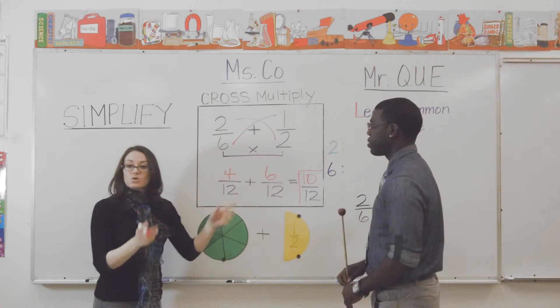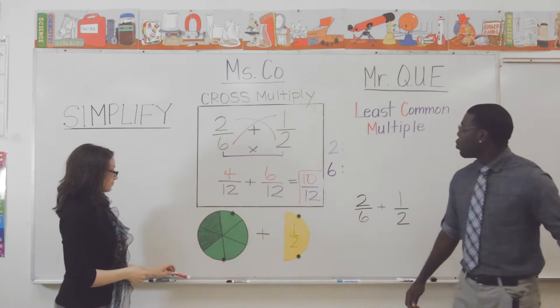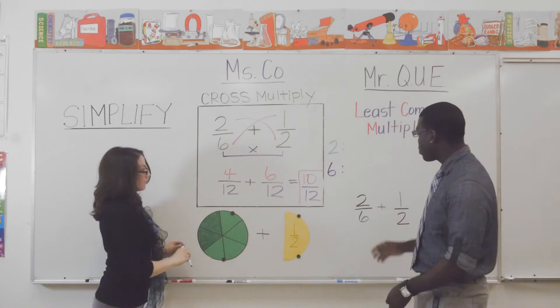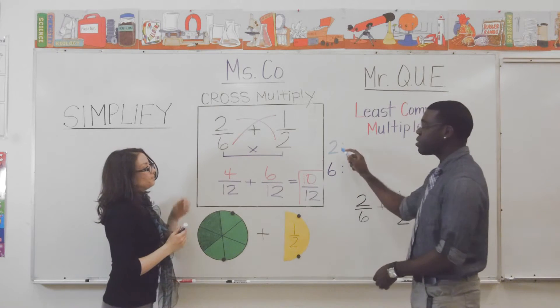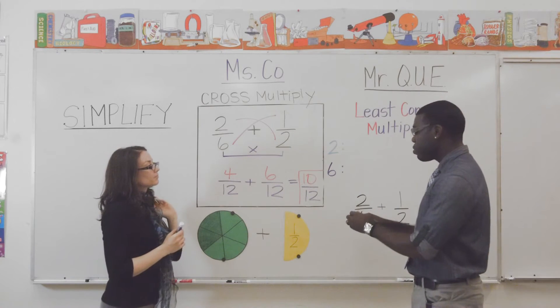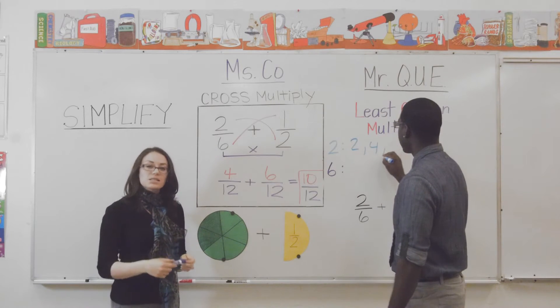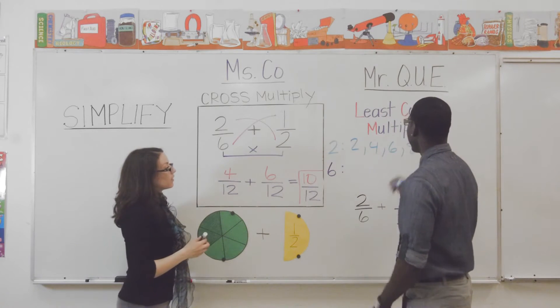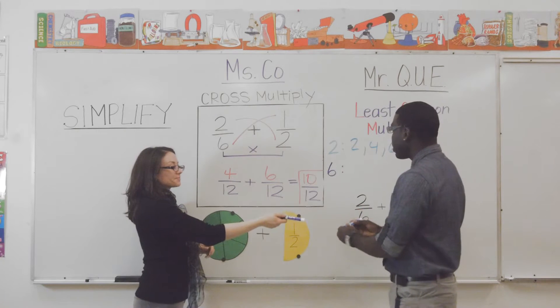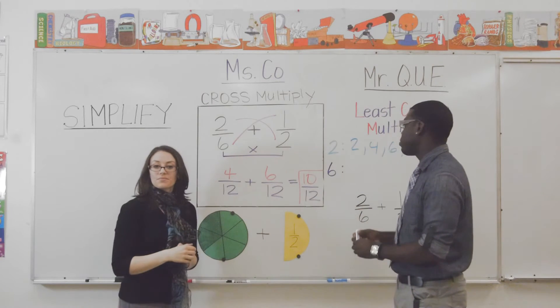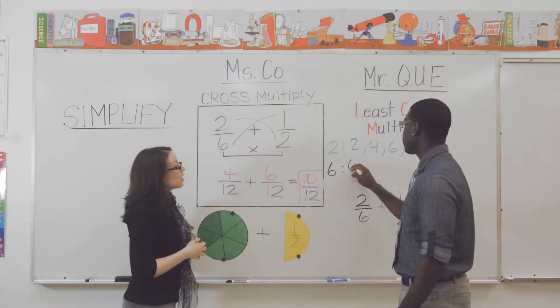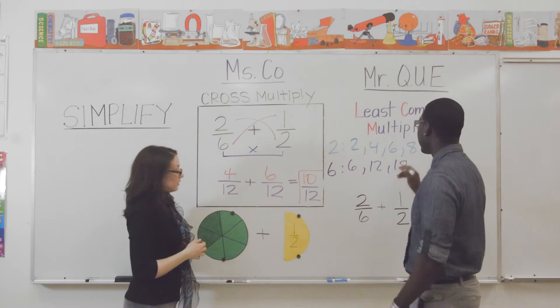Okay. There's another way to do this. Take it away, Q. Okay. Now, we're going to look at the least common multiple. Ms. Co, first, let's check out the number two. And can you give me a few multiples of two? Okay. Two, four, six, eight. Let's stop right there, okay? And now let's check out the number six. Just give me the first few multiples of six. All right. Six, twelve, eighteen. Let's stop right there.